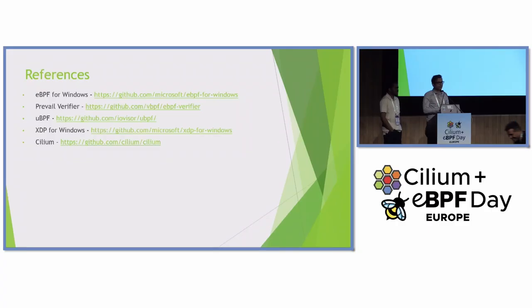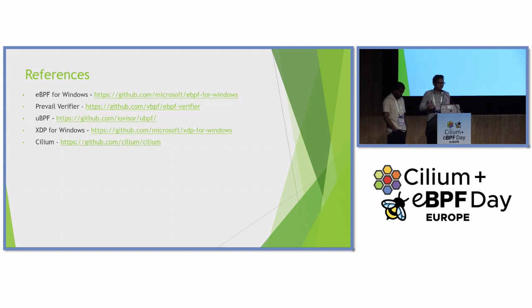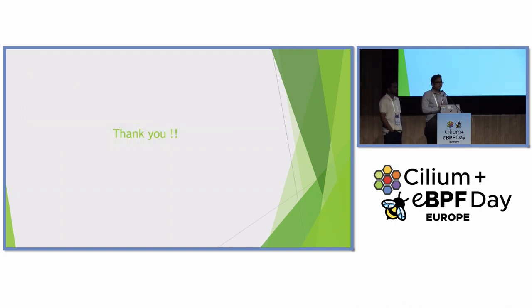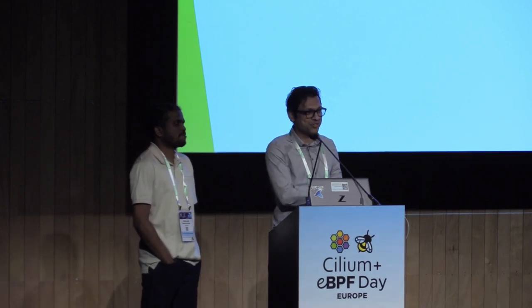The goal for us is to evolve the stack with the community and other open source projects. We are using all of the available tools — the prevail verifier, uBPF, XDP for Windows, and of course Cilium itself. A big thank you to all colleagues in the Windows OS org who are the main pillar driving this forward, and to the wonderful Cilium community and the team at Isovalent for helping bring the power of Cilium beyond Linux to Windows, so people running on Linux can have a seamless experience with Windows containers as well.